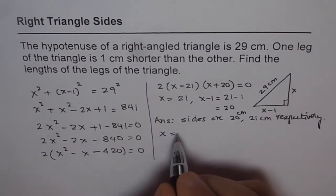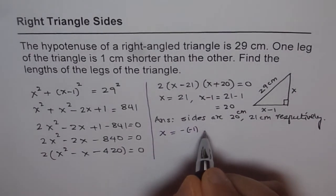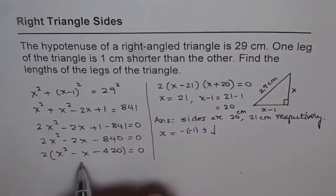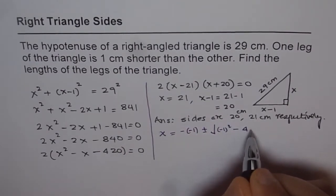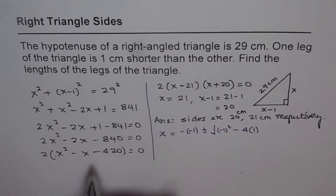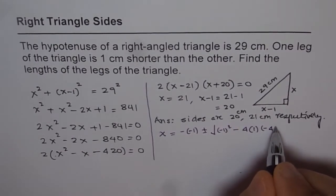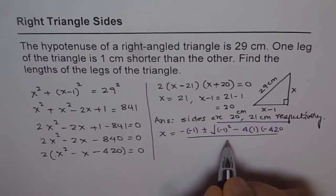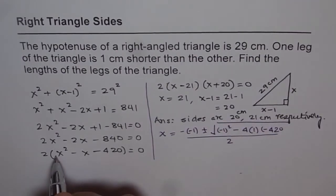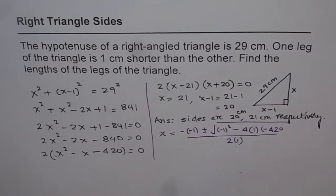Plus or minus b squared, which is minus 1 squared, minus 4 times a. A is 1. C is minus 420, square root divided by 2 times a. A is 1 here. So that is using quadratic formula.